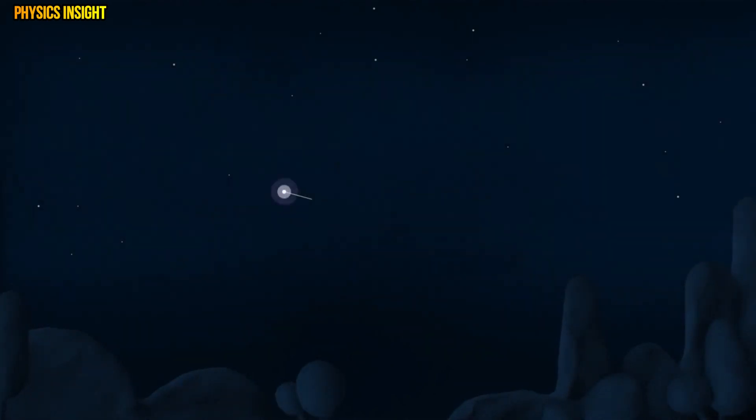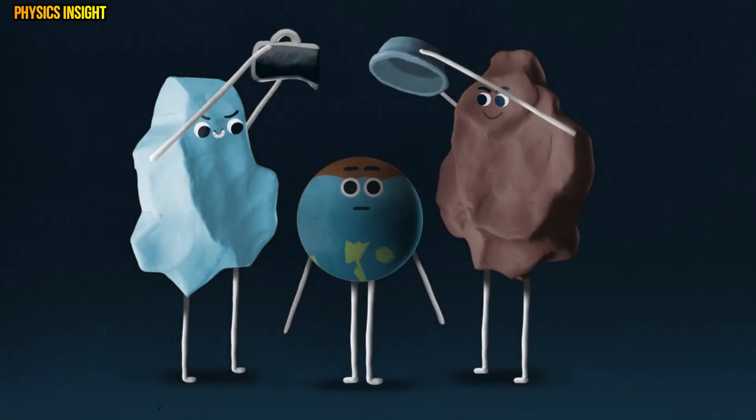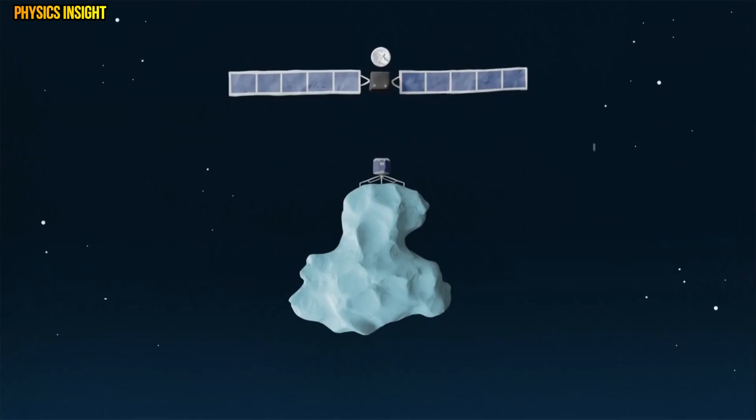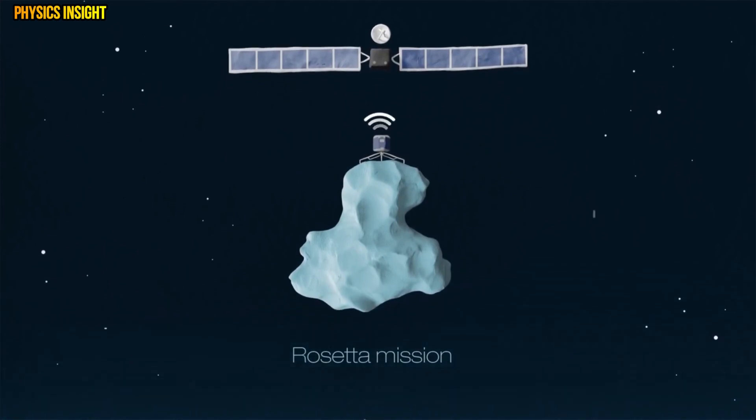The early Earth was hit by thousands of comets and asteroids. It is thought they brought water to our world. Comets may have also brought the ingredients of life to the Earth and the European Rosetta mission could help us unlock secrets about the origins of life on our planet.